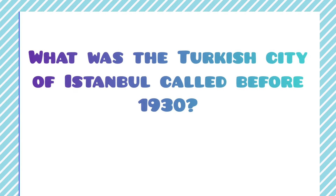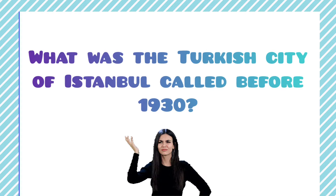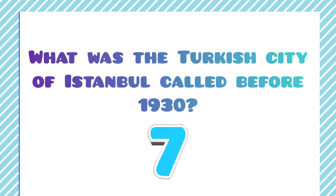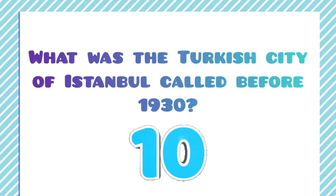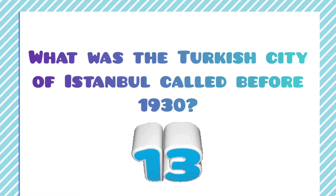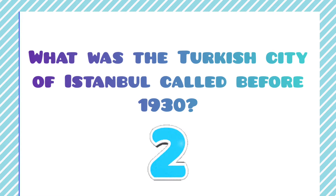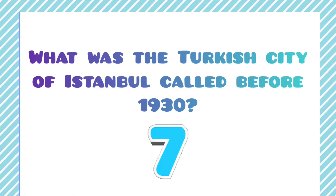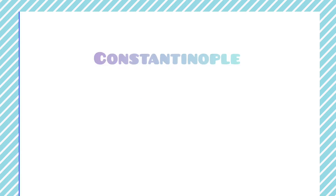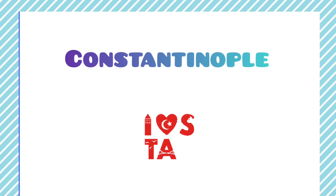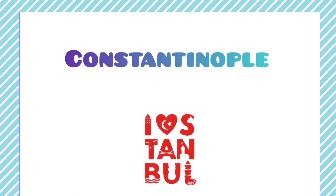What was the Turkish city of Istanbul called before 1930? Istanbul was known as Constantinople before 1930.